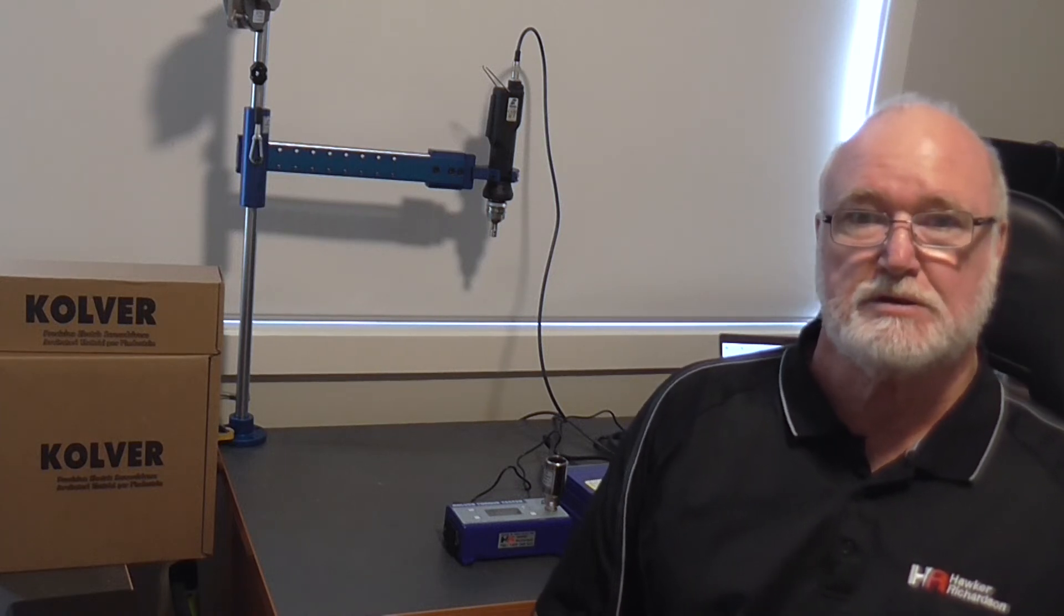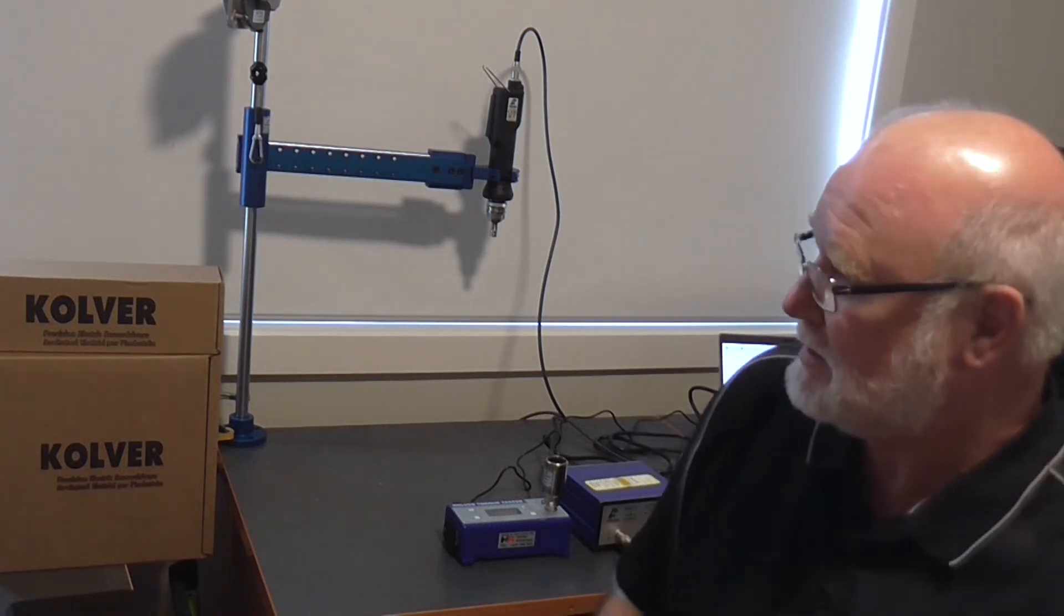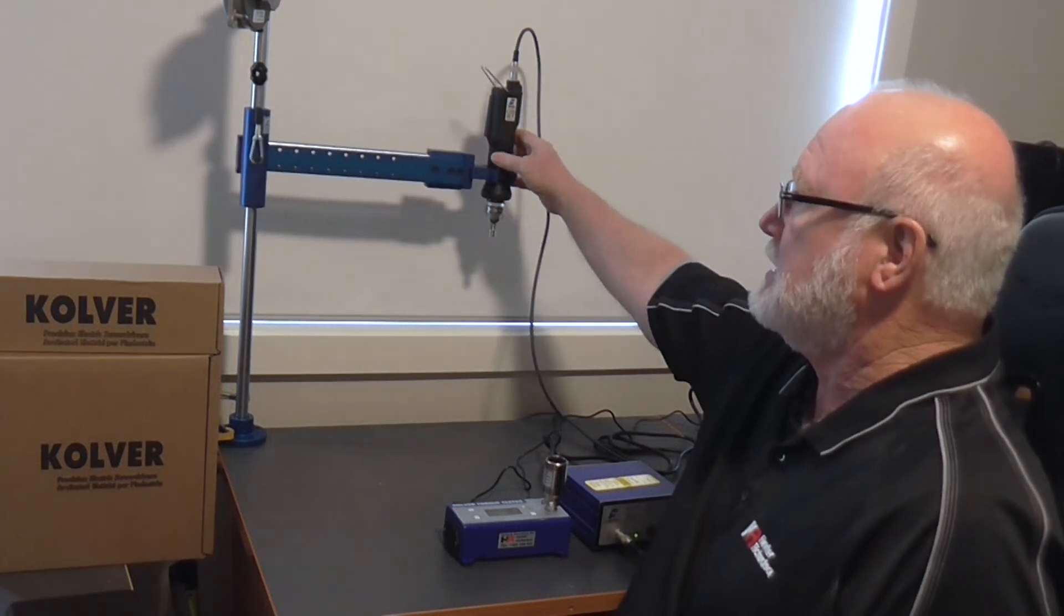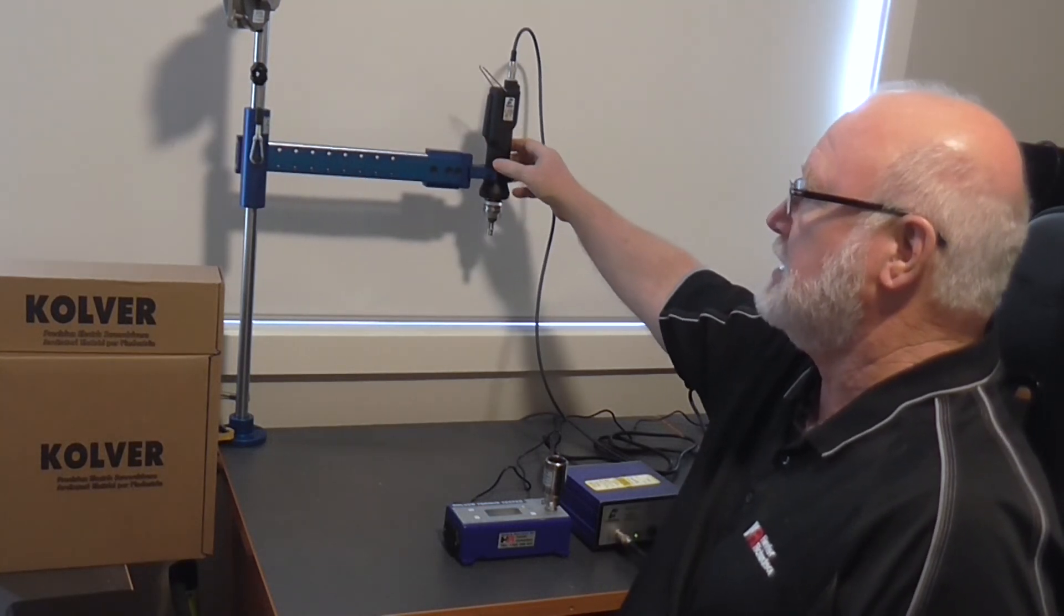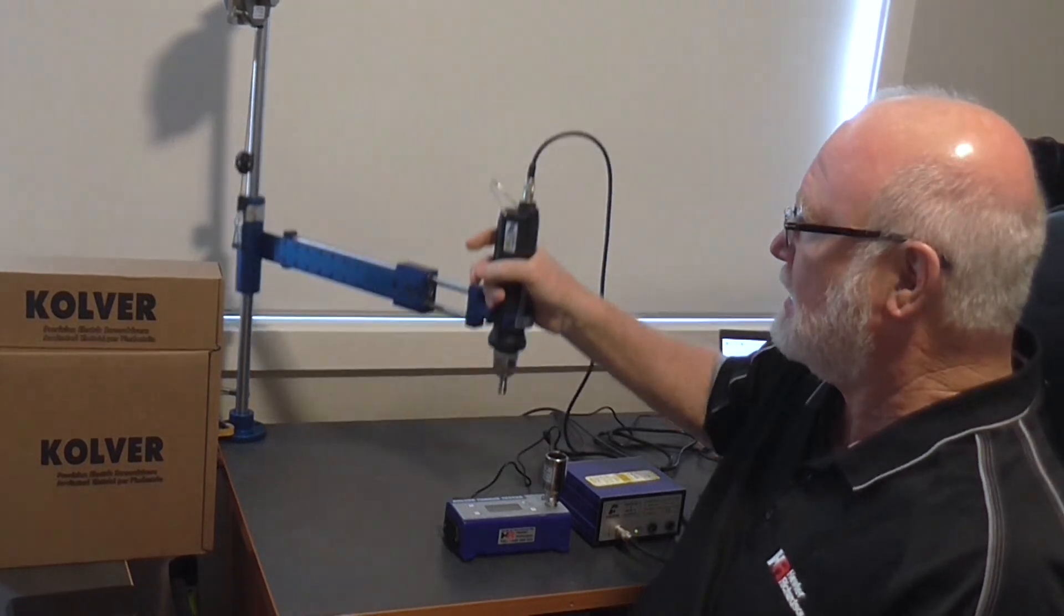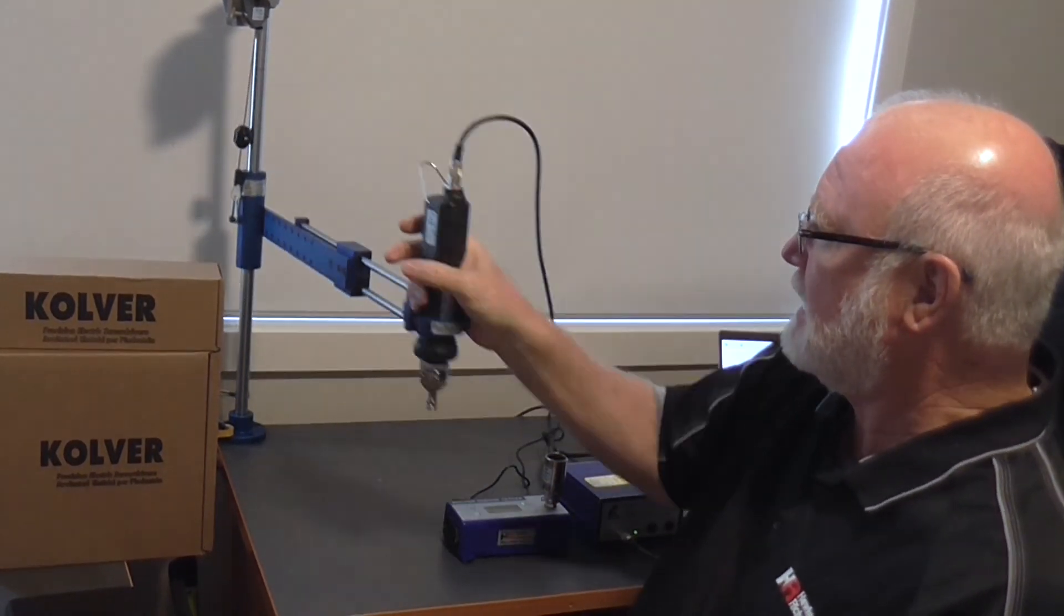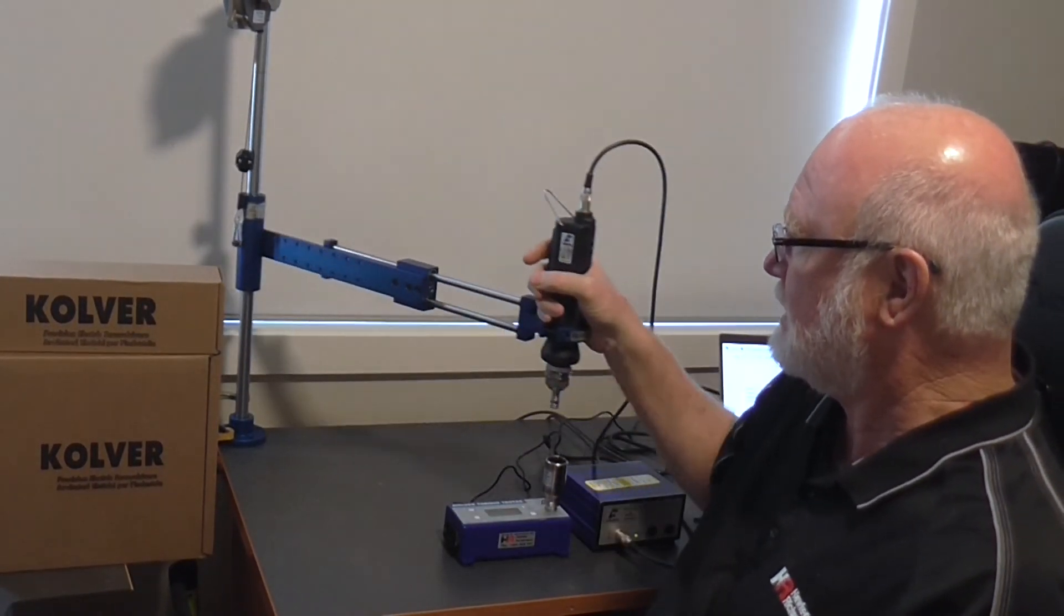So that's our Liner One torque reaction arm from Kolver that will handle up to torques of 25 Newton meters and as you can see it sits conveniently out of the road when not in use. It is very easy to move up and down and slides freely.